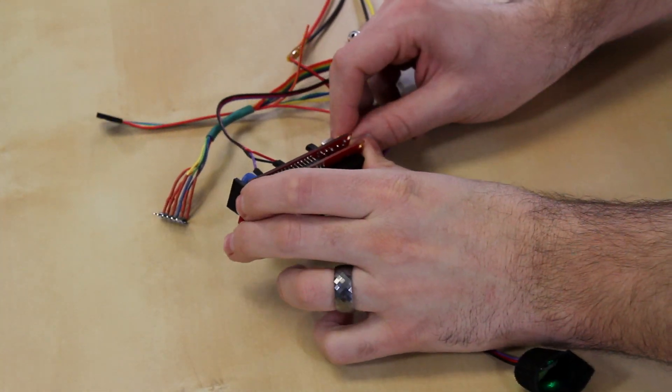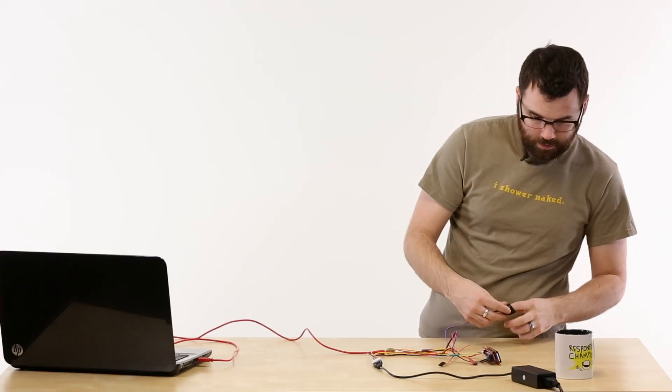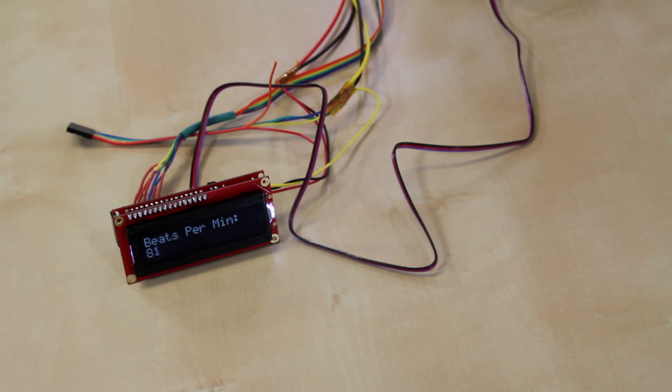So now we just give it some power. So once you've got it strapped to your finger, it tends to stabilize a little bit, and then you get your actual beats per minute. And there you go. It is that simple.